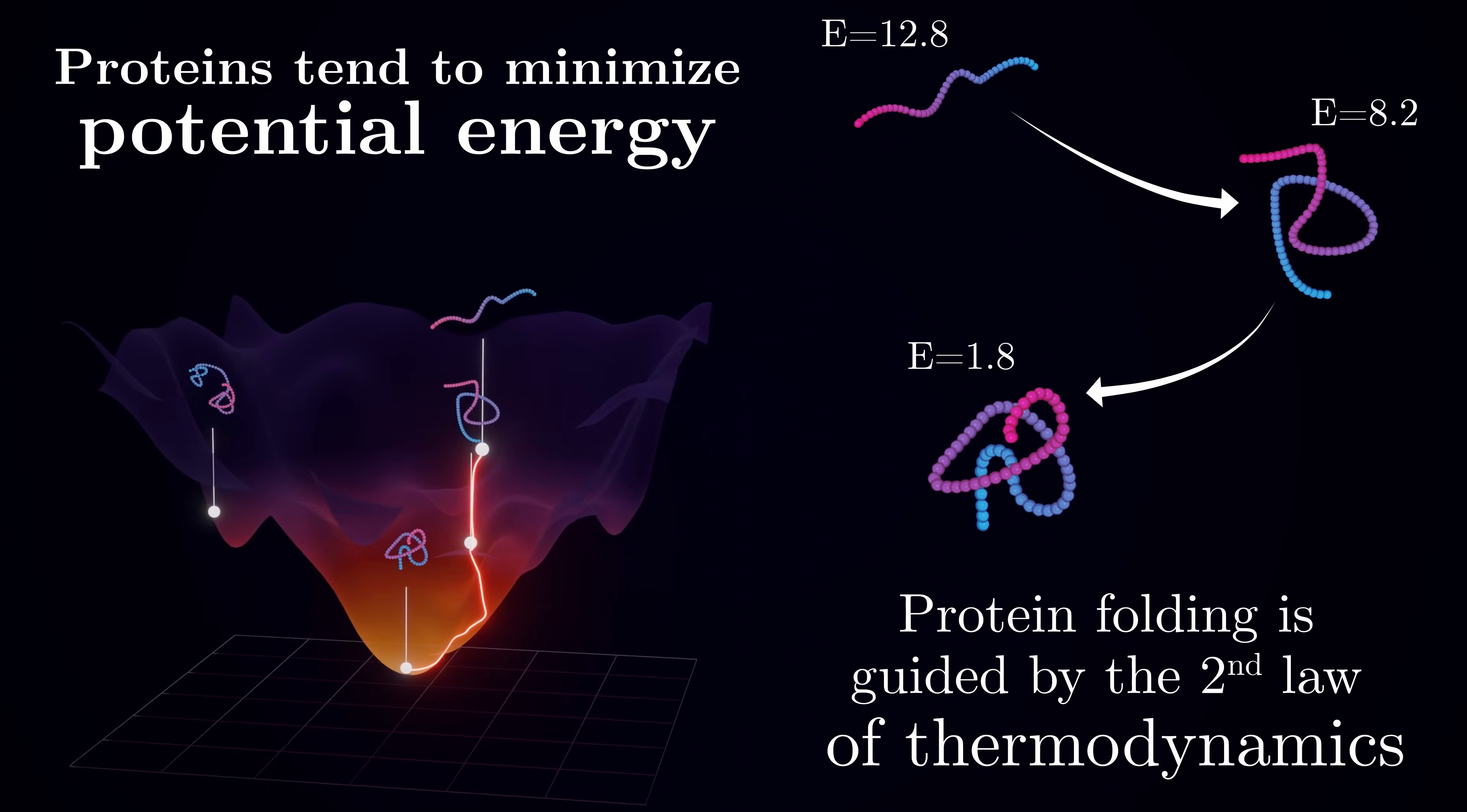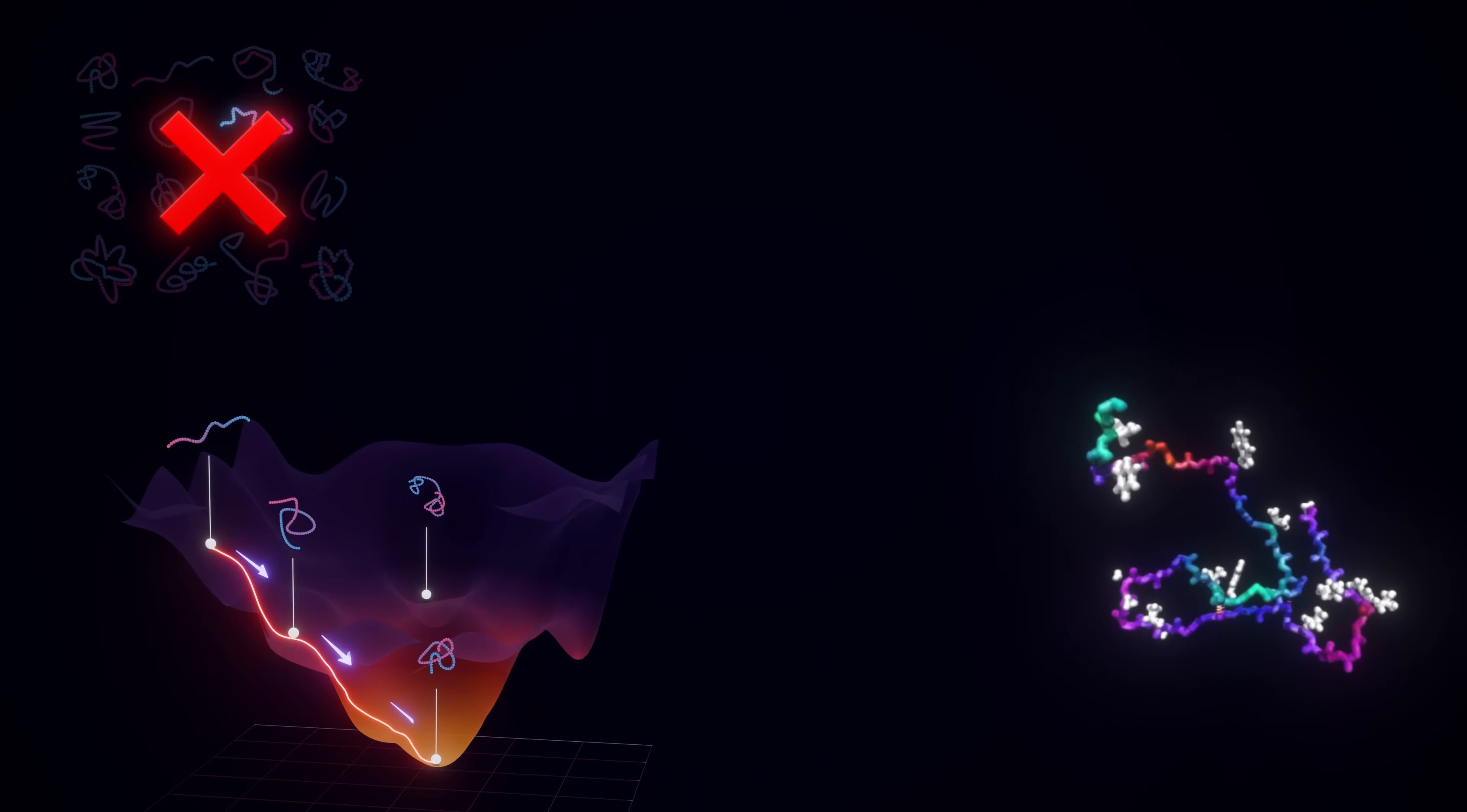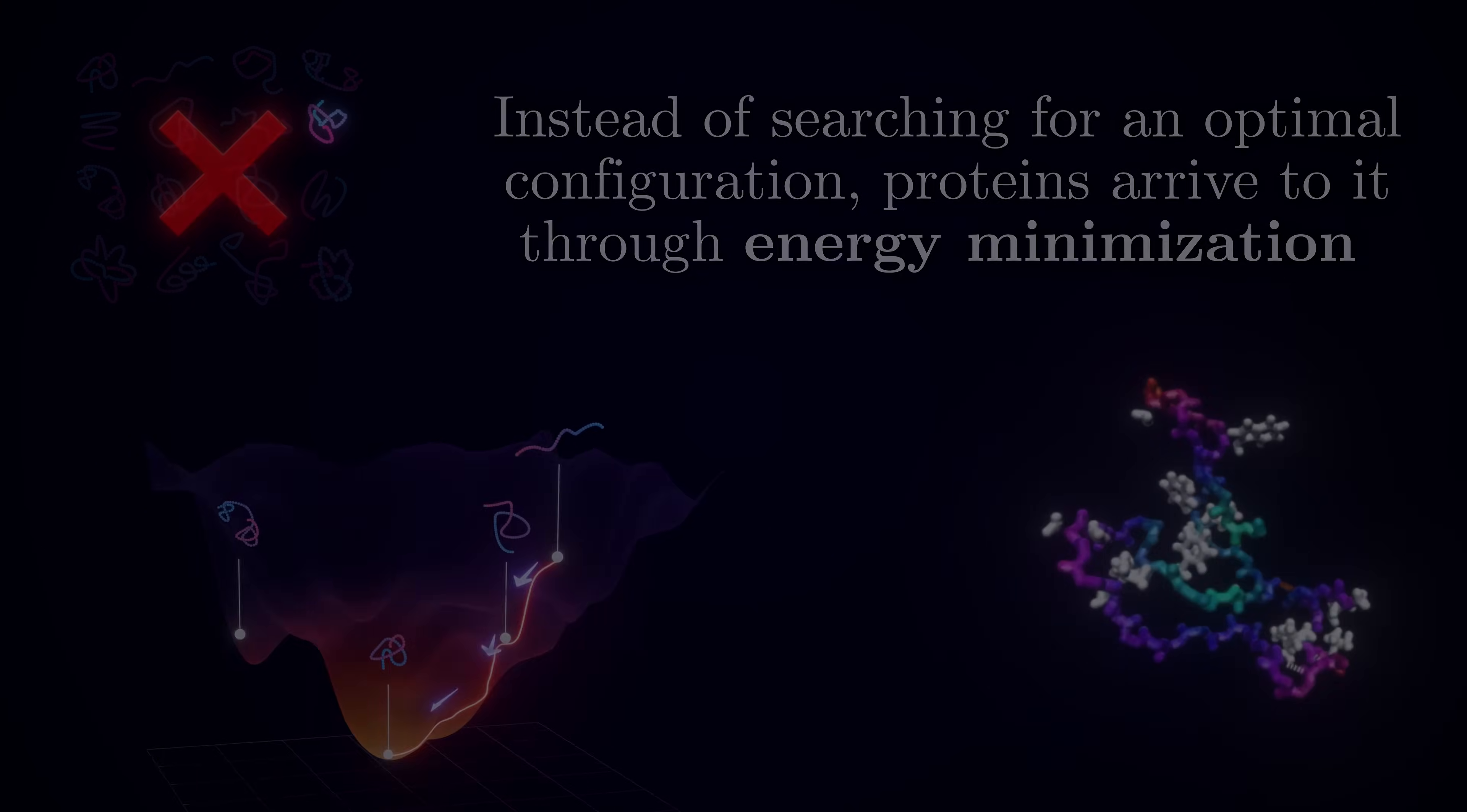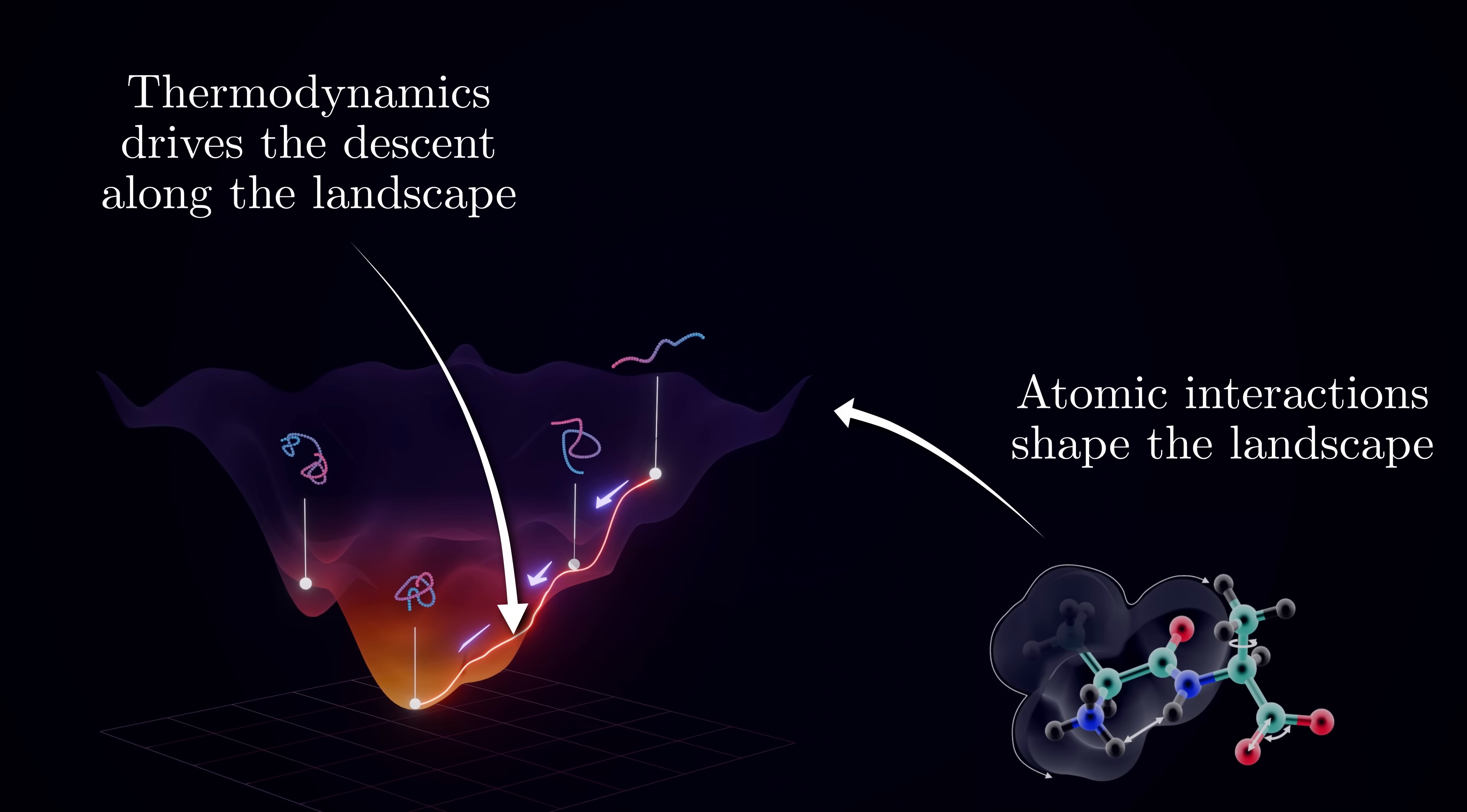When a protein is folding, it is essentially rolling downhill on the energy landscape, following the steepest path towards the valley. This is why proteins can fold so quickly. They don't need to search through all possible configurations. They simply follow the natural tendency of physical systems to minimize their potential energy. The protein's folding process is guided by the shape of the energy landscape, which in turn is determined by the interaction between its atoms. And the descent along the surface is essentially driven by the underlying physical process of energy minimization.